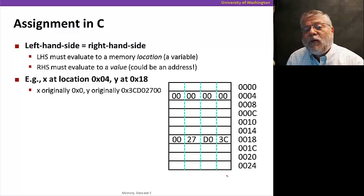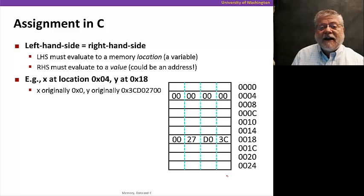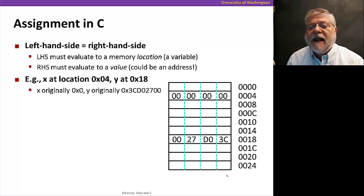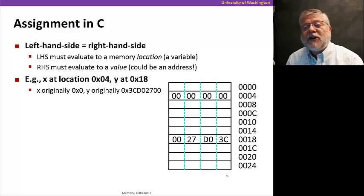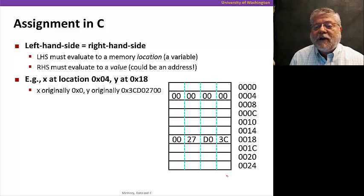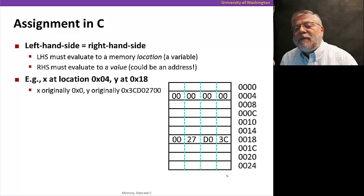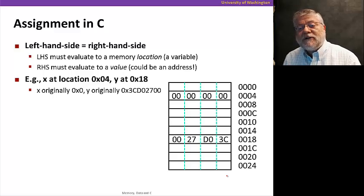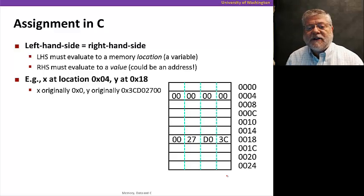All right. In general, what we have in C in an assignment statement is a left-hand side and a right-hand side on the two sides of the equal sign. The left-hand side has to evaluate to a memory location, a place where we put a value. And the right-hand side has to evaluate to a value, the value we're going to go put there. And because we also have pointer variables, that value could be an address.